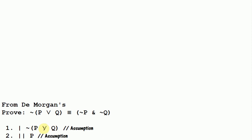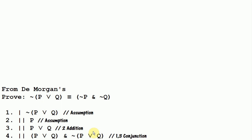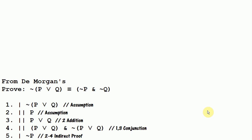Look at what we have in line one — we have the negation of p or q. If we can get p or q, that will contradict line one. Since we have p, we can easily get p or q by adding q to line two. We get p or q by addition. So then we just conjoin lines one and three — we get p or q and neither p nor q, which is a contradiction. That lets us finish this indirect proof and we get not p.